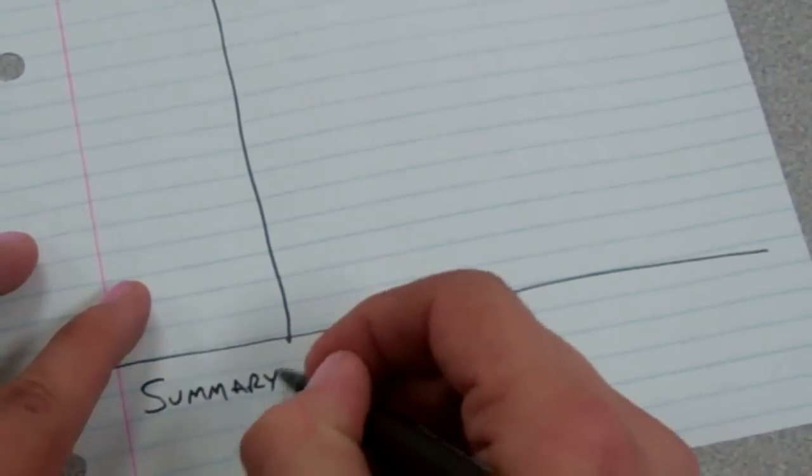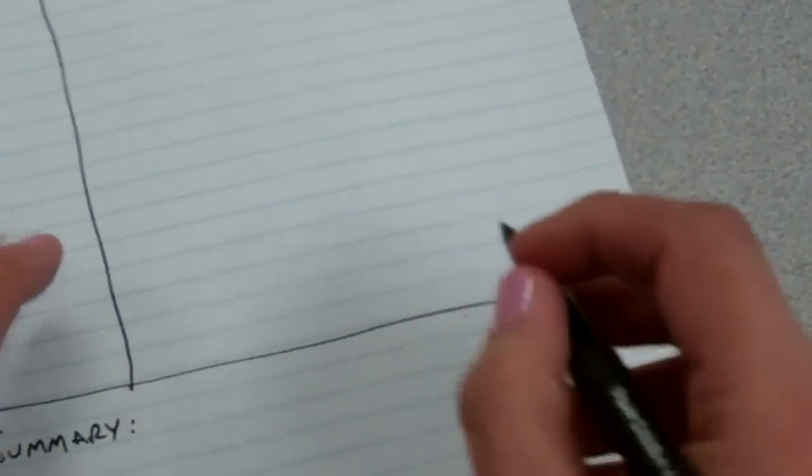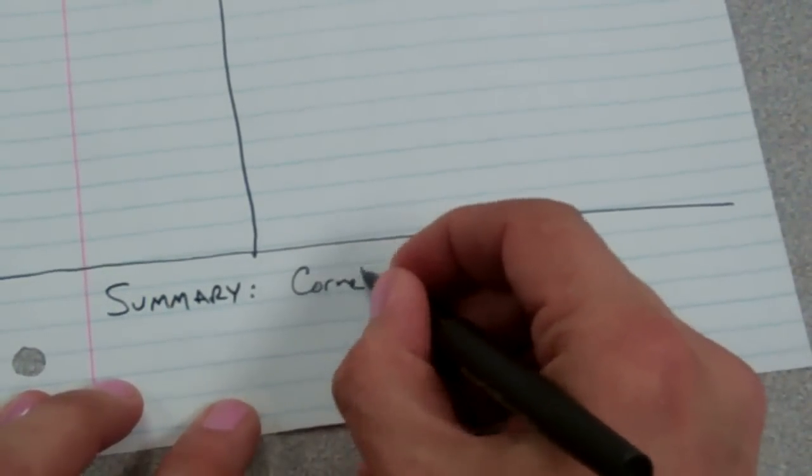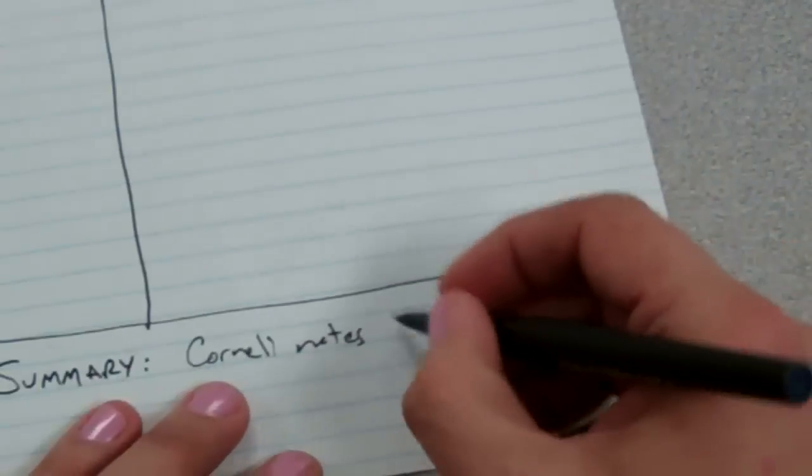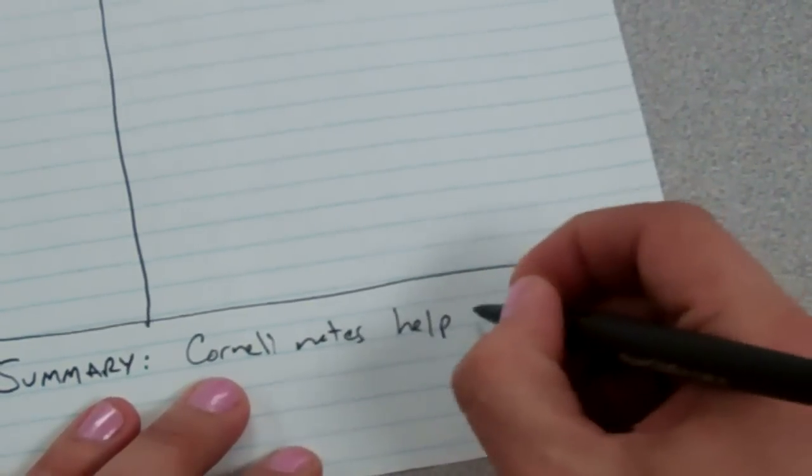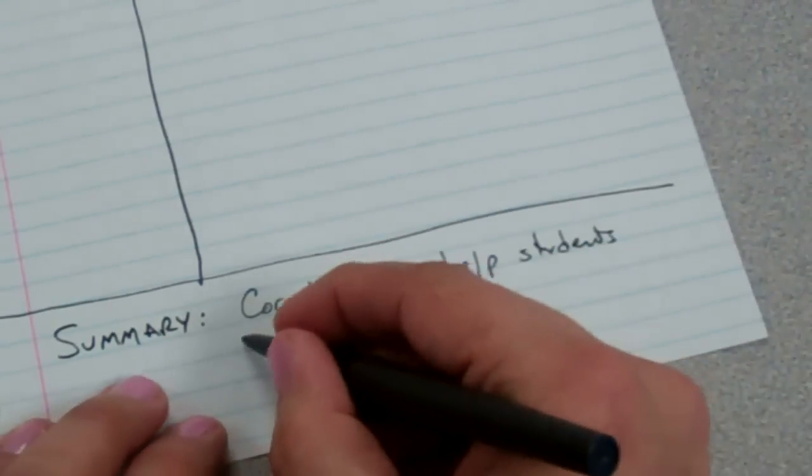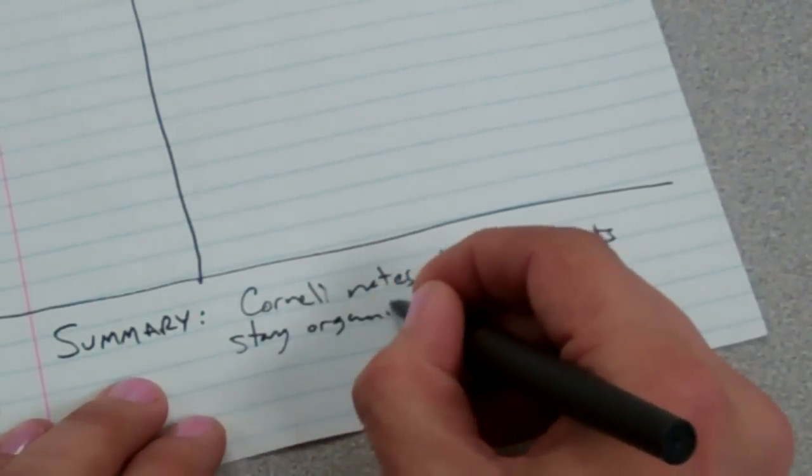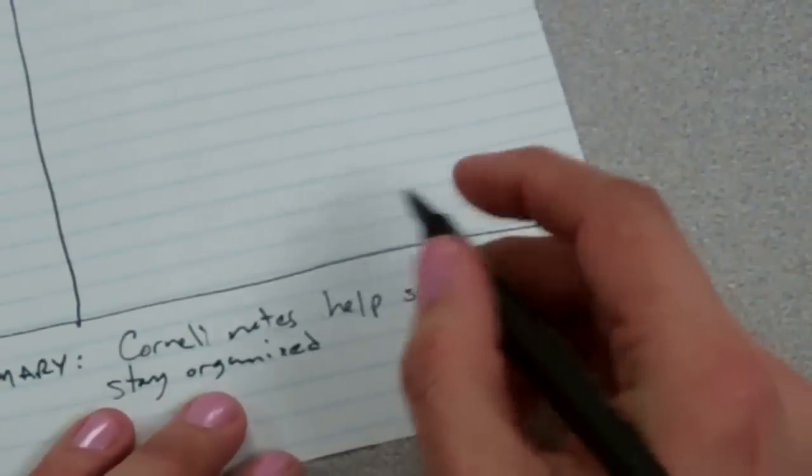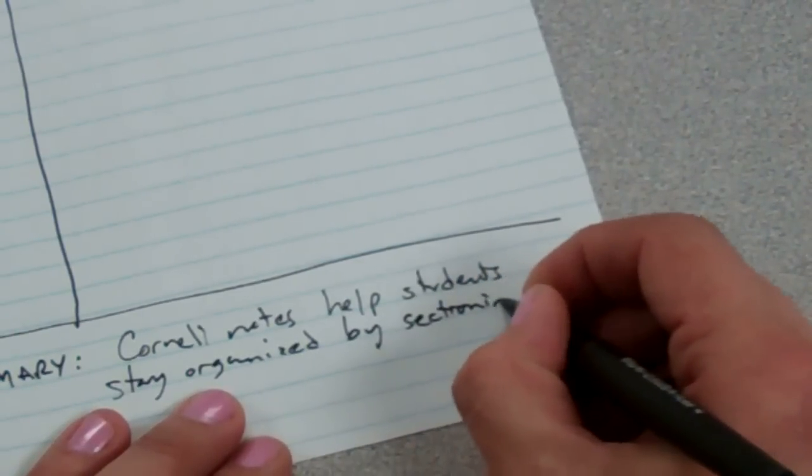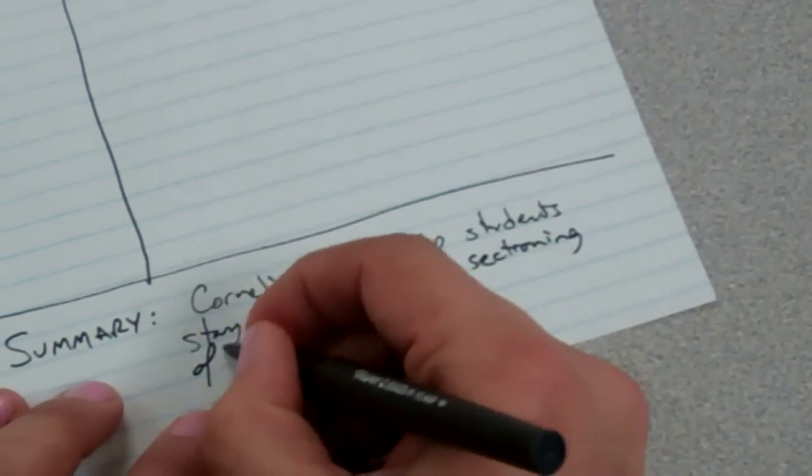And then, at the bottom of the page, you do a summary. So, the summary for this might be something like: Cornell notes help students stay organized by sectioning off the page.